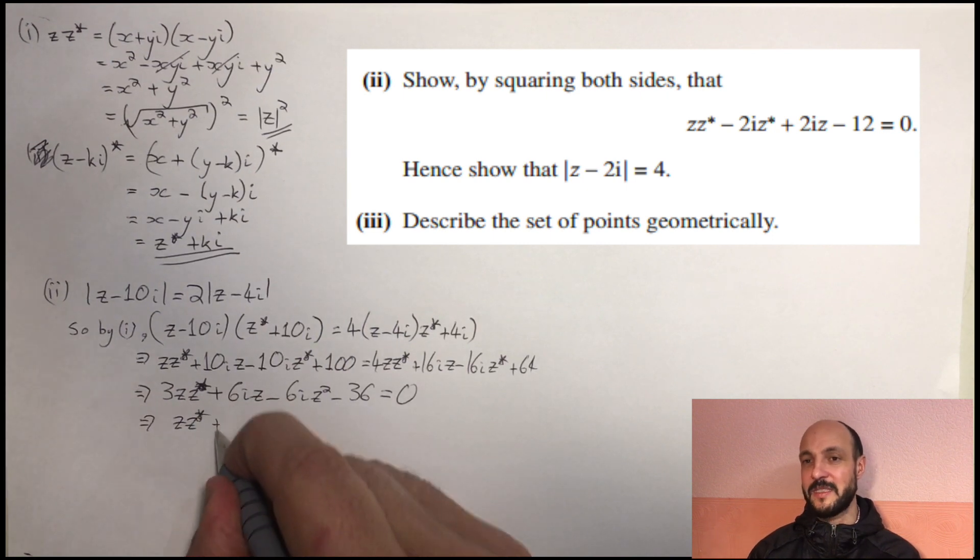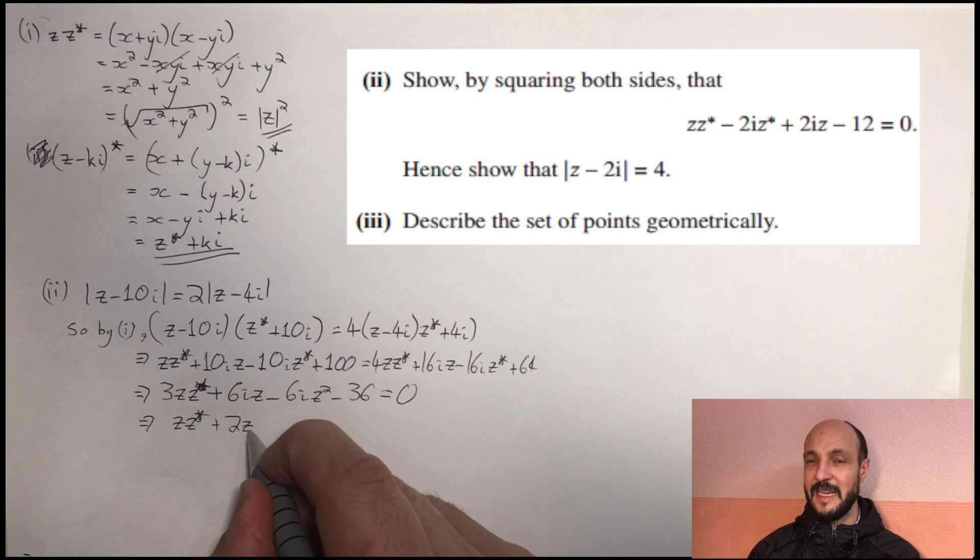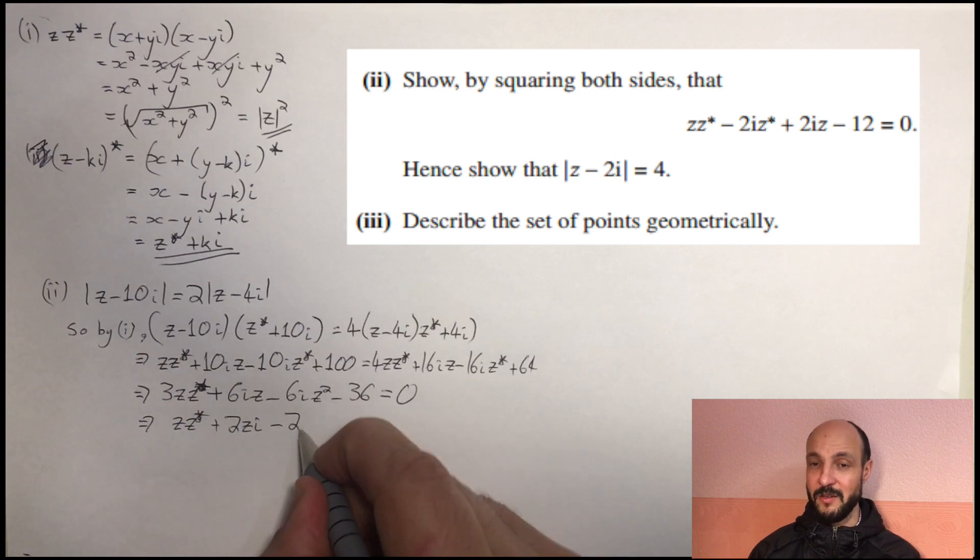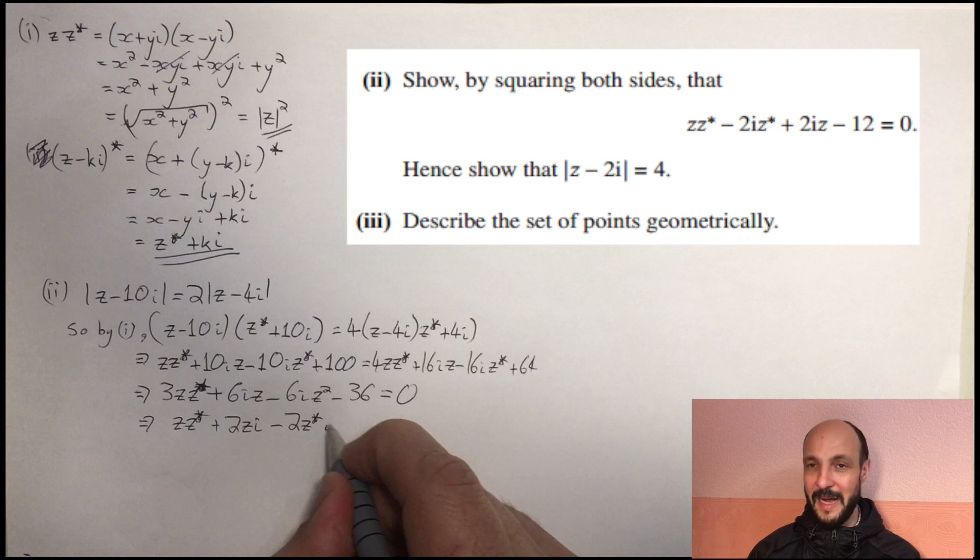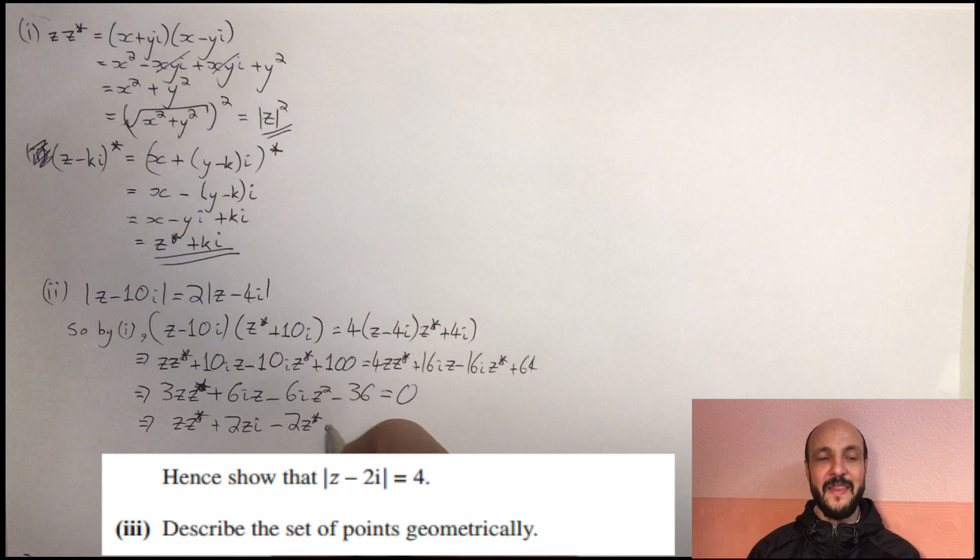So then, all we need to do to get the answer that we're looking at is to divide everything by 3. So we can go straight from there, divide everything by 3, and we get zz star minus 2iz star plus 2iz minus 12 equals 0.